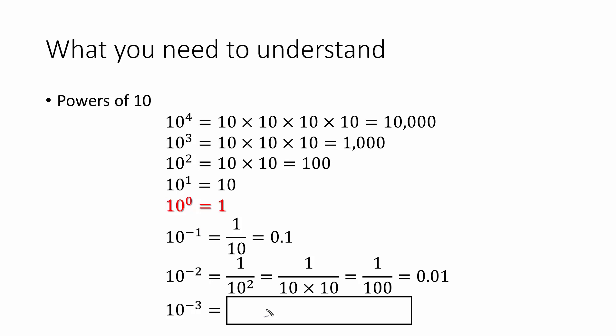Can you guess how we would write 10 to the negative 3rd in decimal notation? Continuing the pattern, we would have 3 decimal places. So we would write the number 1, which would make up 1 of the decimal places, and we would need 2 more 0s to get our 2nd and 3rd decimal place. So 10 to the negative 3rd is 0.001.